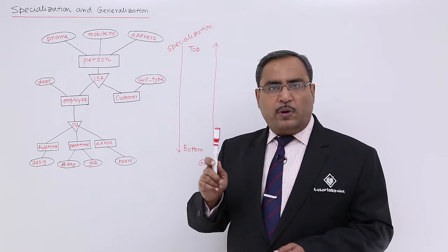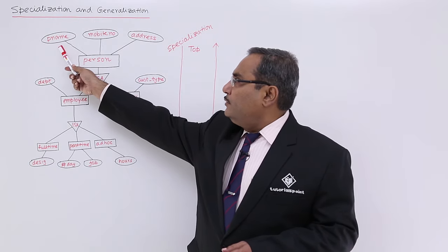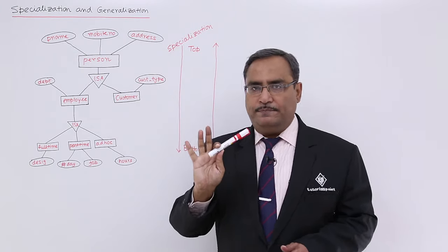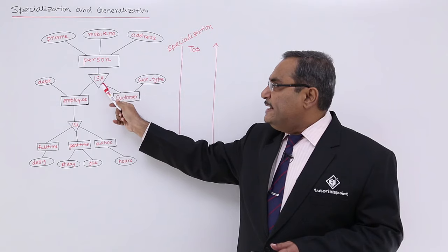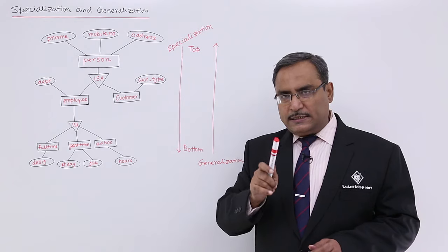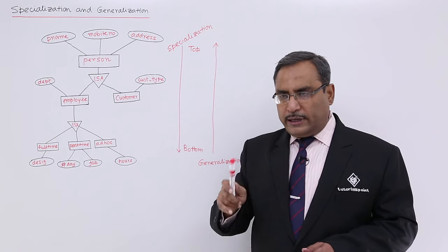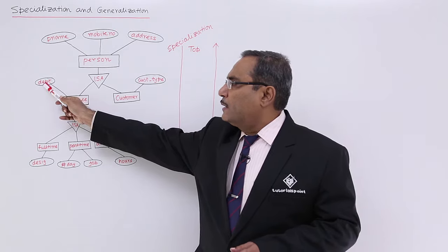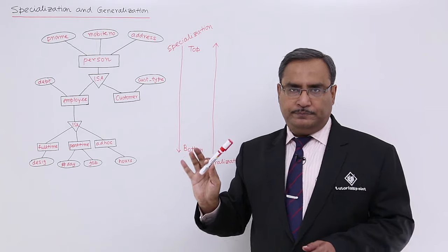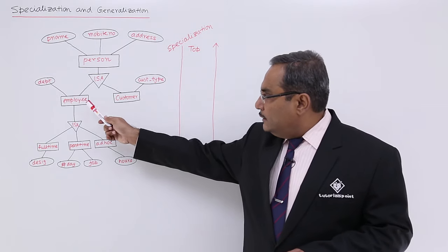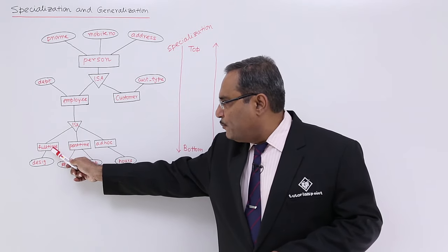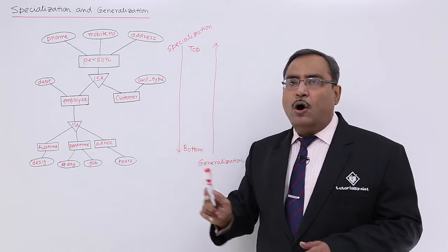Here, this person is one entity connected with three attributes: person name, mobile phone number, and the respective address of the person. This person is either an employee or a customer. This employee is having department as one of the attributes, and this customer is having customer type as one of the attributes. This employee can be specialized into full-time employee, part-time employee, or ad hoc employee.